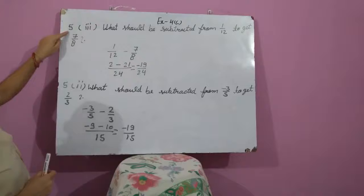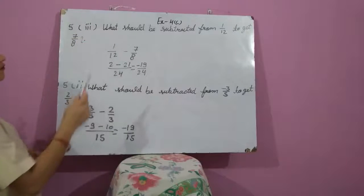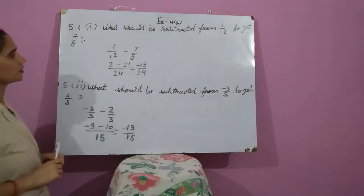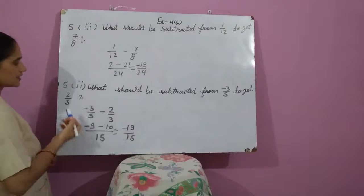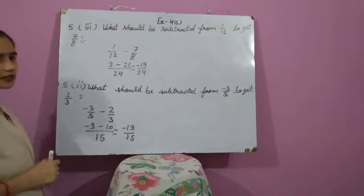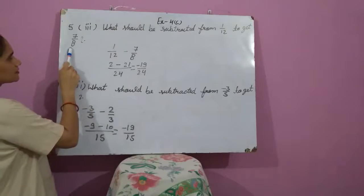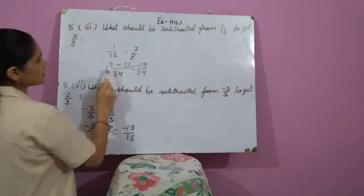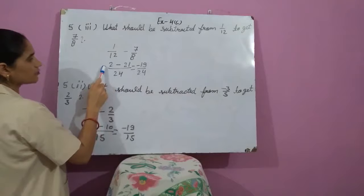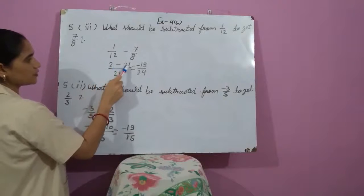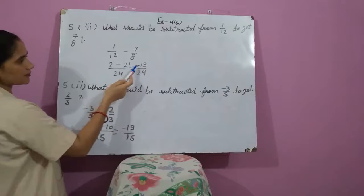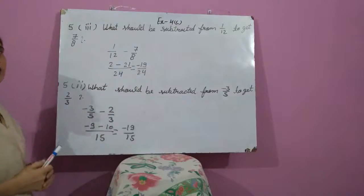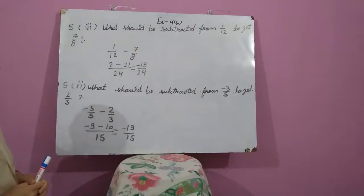Come to question number 5, third part: What should be subtracted from 1 upon 12 to get 7 upon 8? This is the same approach as parts 1 and 2. We subtract 7 upon 8 from 1 upon 12. The LCM is 24. After the calculation we get 2 minus 21, and after subtraction we get minus 19 upon 24. This is the required rational number.